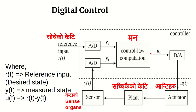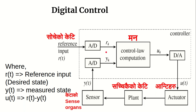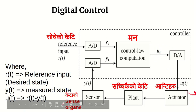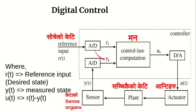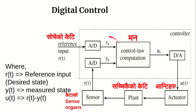This is a digital controller. This is a reference input or desired input state — yt. This is the measured state — ut. This is the control signal — ut. This is a difference block. This is the digital controller. This is the actual data output. This is the user — the actual order.